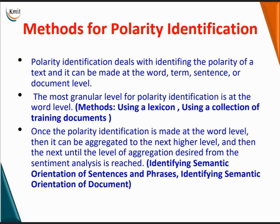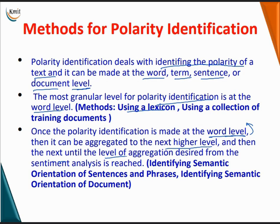First, we will discuss methods for polarity identification. Polarity identification deals with identifying the polarity of a text. It can be made at the word, term, sentence, or document level. The most granular level for polarity identification is at the word level, for which we use a lexicon or a collection of training documents. Once polarity identification is made at the word level, it can be aggregated to the next higher level until the level of aggregation desired is reached. We will discuss identifying the semantic orientation of sentences, phrases, and documents.